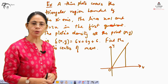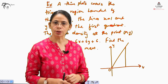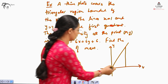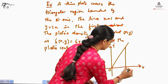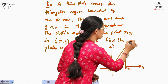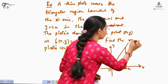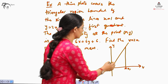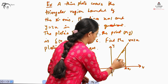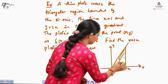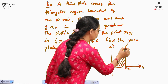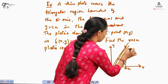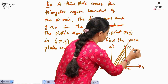First, we need to sketch the region of integration. This is the line x equal to 1. This is y equals to 2x. Therefore, this becomes the region of integration. This point is (1, 2).